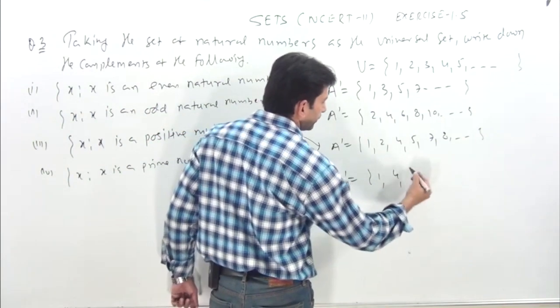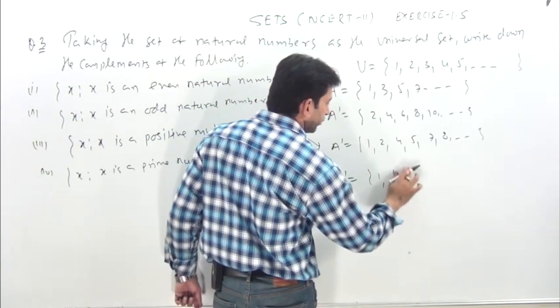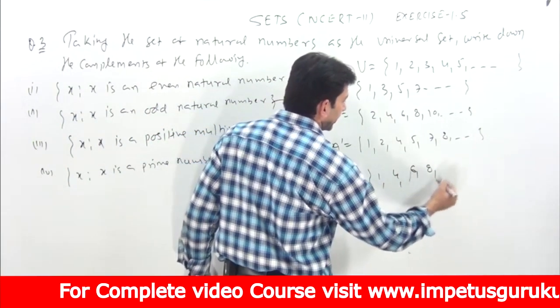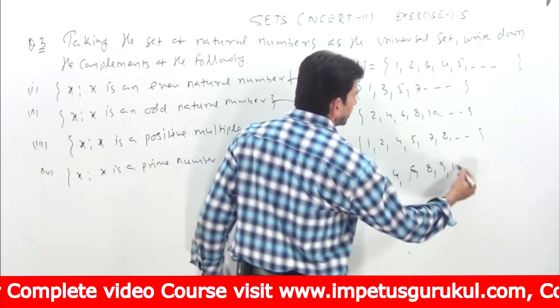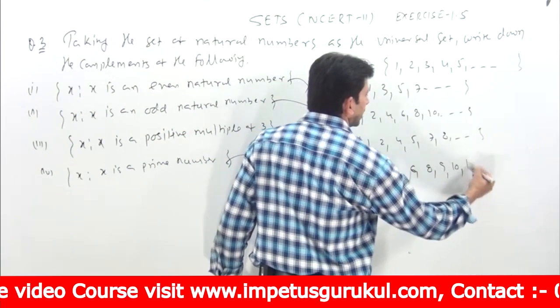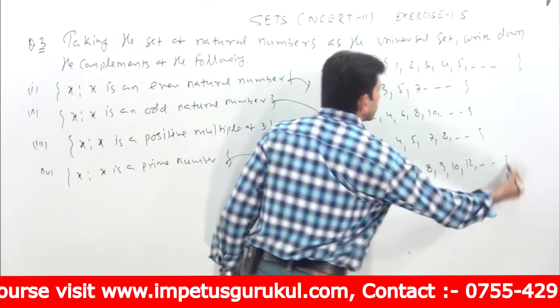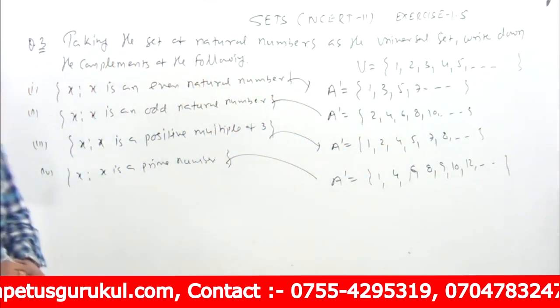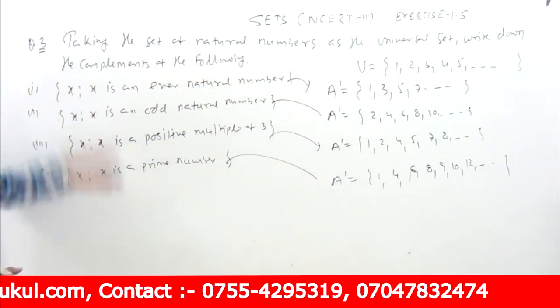If x is a prime number, leave its prime numbers. So the complement = {1, 4, 6, 8, 9, 10, 11...} wait — complement of primes = {1, 4, 6, 8, 9, 10, ...} and so on. This way you can solve the remaining questions.